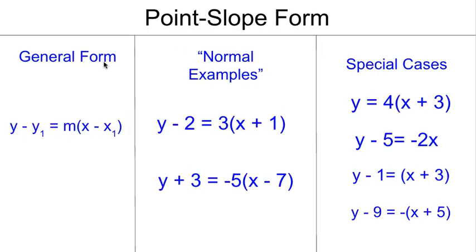Now we can look at the slightly more complicated point-slope form. The general form of this is written as y minus y sub 1 equals m times quantity x minus x sub 1. And there's a lot going on here. Let's first talk about this sub 1 business.